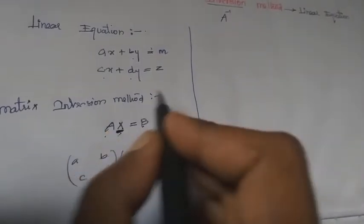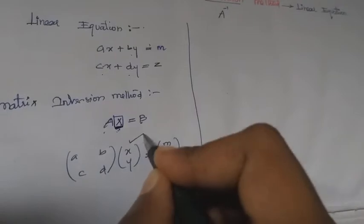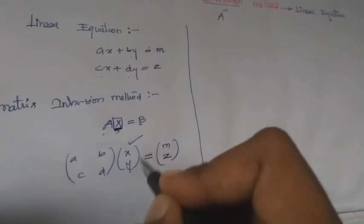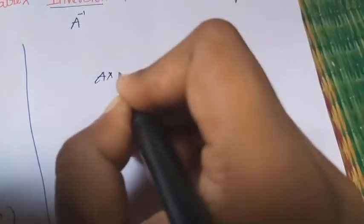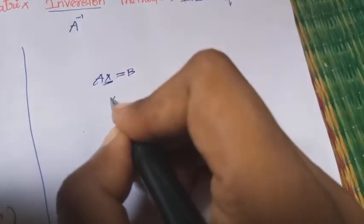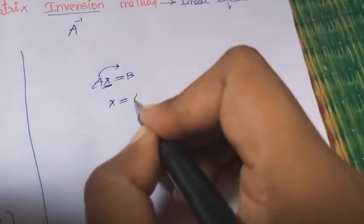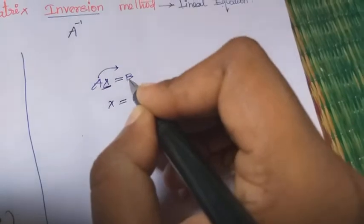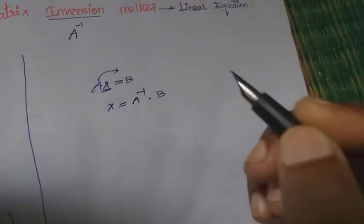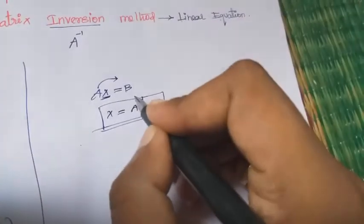We need to solve for the variable values. X equal to, the answer is A inverse into B. The remaining term B is the main formula. A inverse, find out, B already gave the question.